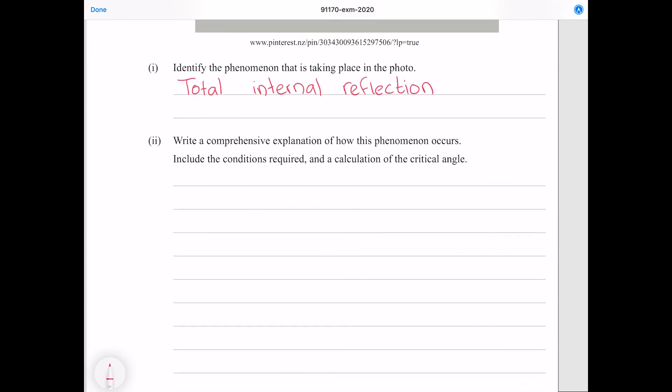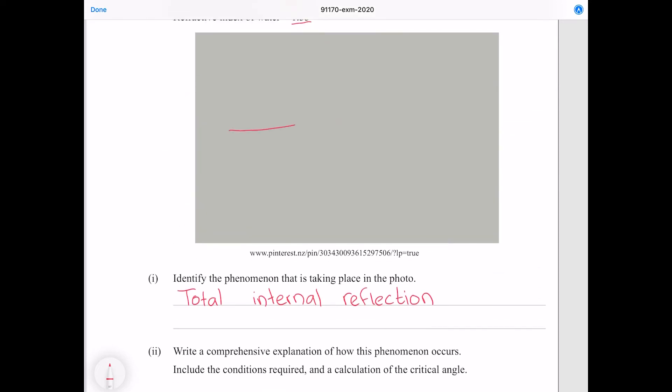Write a comprehensive explanation of how this phenomenon occurs. Include the conditions required and a calculation of the critical angle. And so if we have a ray coming in on a particular angle we're going to see it refract away from the normal because it's going from a slow medium to a fast medium.